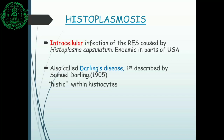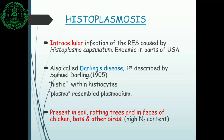Darling thought the causative agent resembled a protozoan agent like Leishmania donovani and named it Histoplasma capsulatum — 'histio' meaning histiocytes as it was intracellular, and 'plasma' meaning resembling Plasmodium species. This agent is present normally as a soil saprophyte — in soil, in rotting trees, in droppings of chickens, bats, and other birds, where there is high nitrogen content for its growth and development.